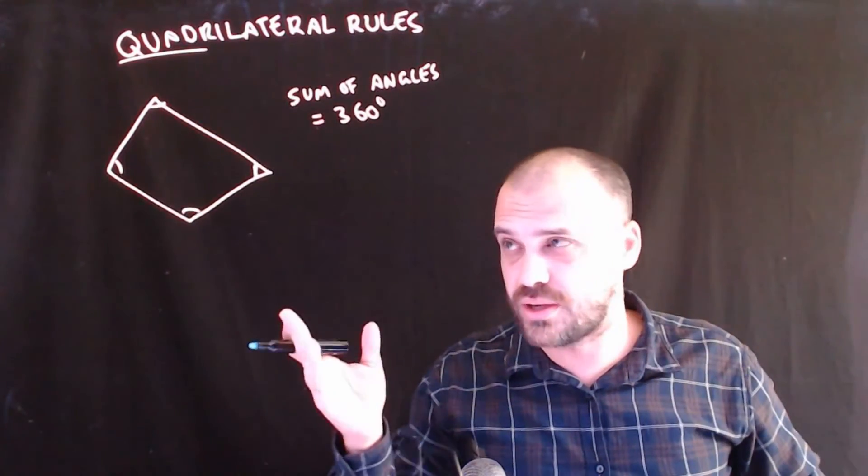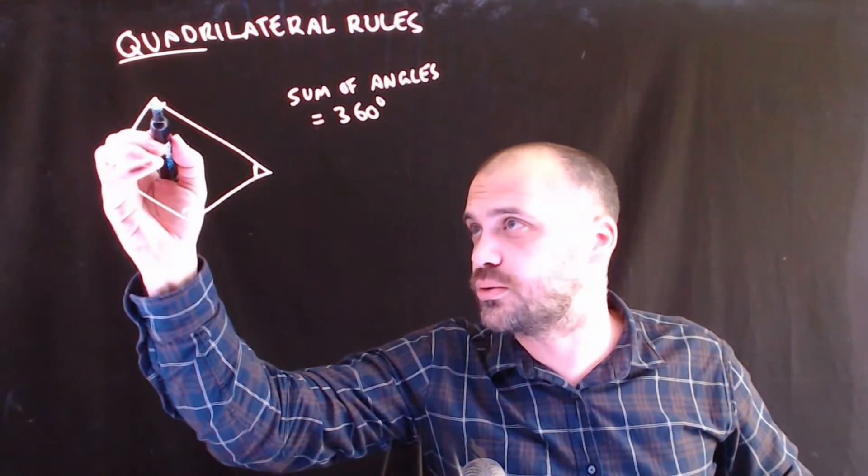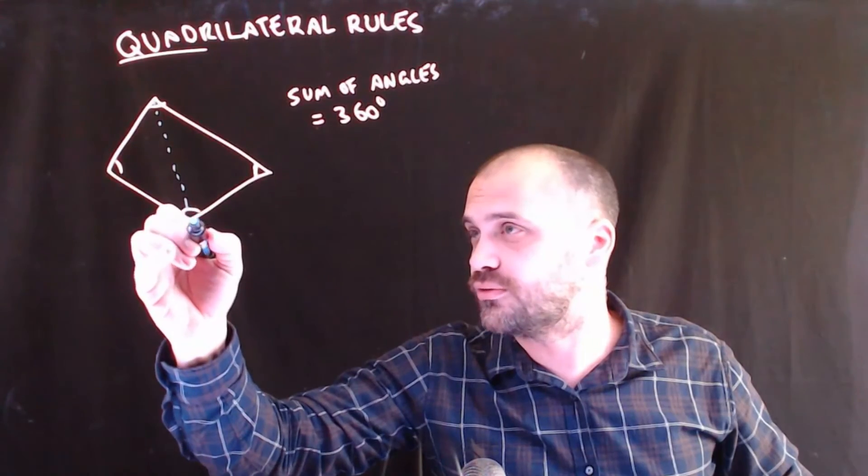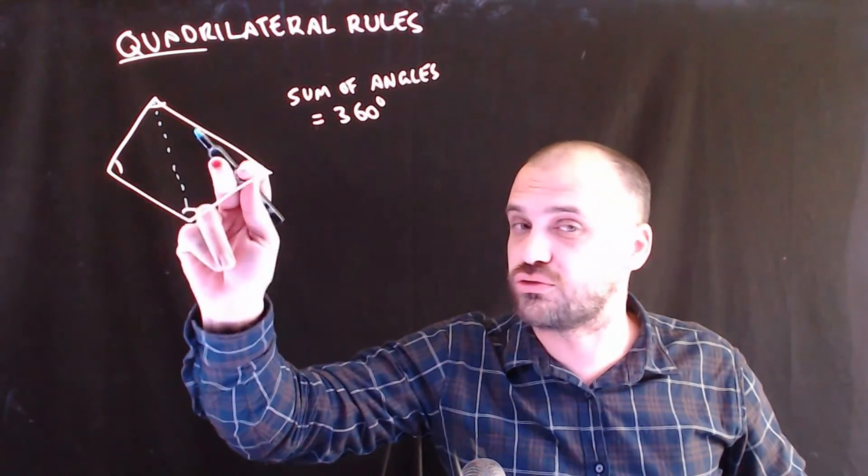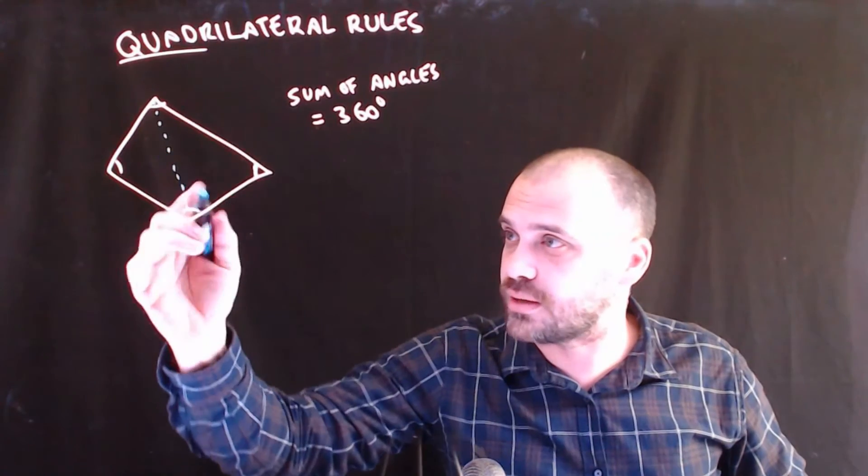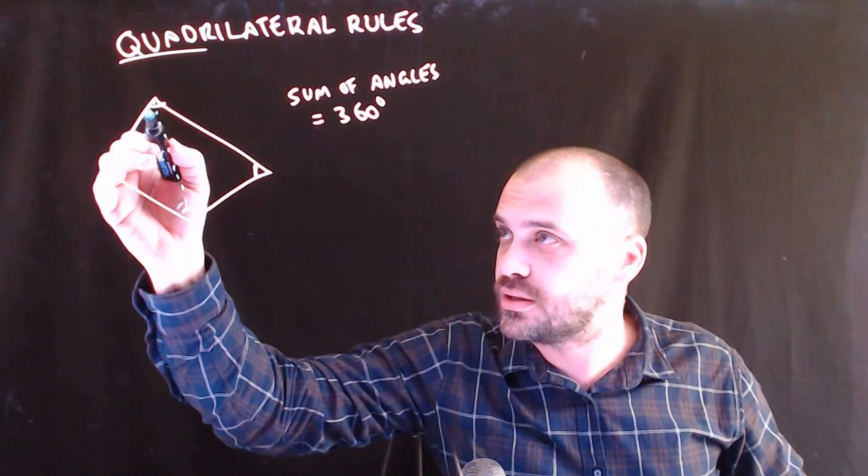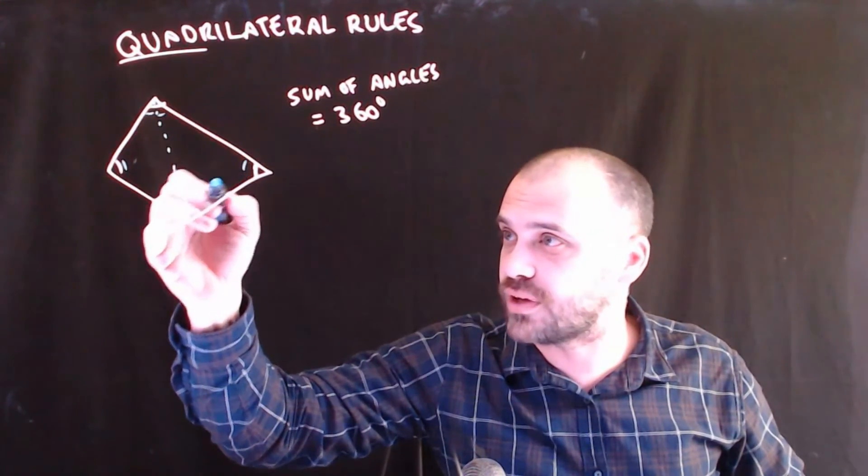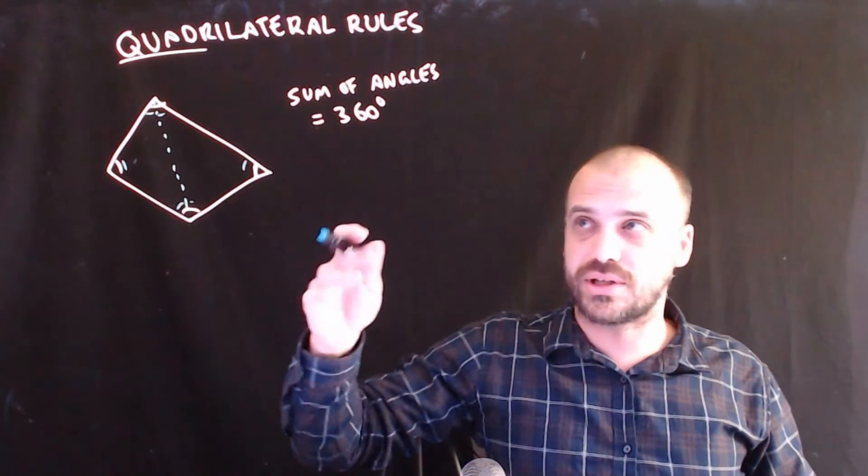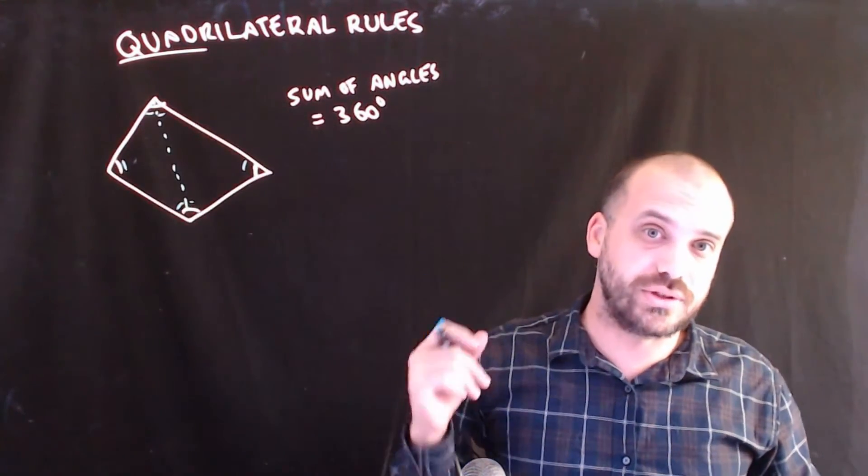It's not hard to see why that is. You can always take a quadrilateral and cut it in half. If you cut it in half, you'll have two triangles. The angles in this triangle have to add up to 180. The angles in this triangle have to add up to 180. So, altogether, it's going to add up to 360.